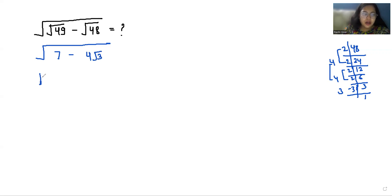Now 7 we can write this as 4 + 3 minus 4, we can write it as 2 times 2 times √3. Now 4 is 2², similarly 3 is (√3)² minus 2 times 2 times √3.